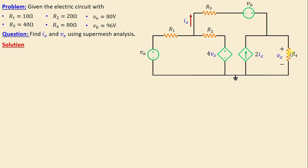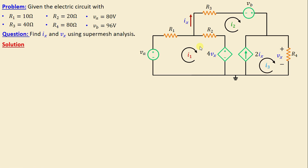First, let's begin by defining the number of meshes in this network. It's evident that there are three meshes. We assign mesh currents: i1 is the current in mesh one, i2 is the current in mesh two, and i3 is the current in mesh three. All currents are chosen in the clockwise direction.